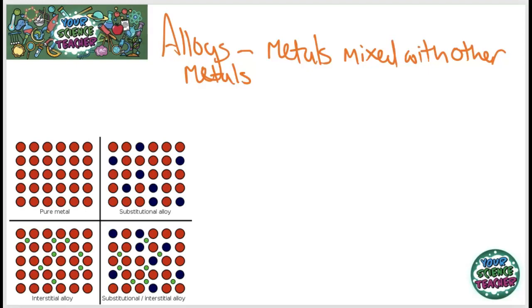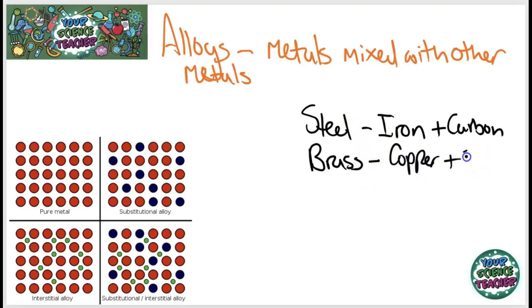Some specific alloys you need to know about are steel, which is a mixture of iron and carbon. We need to know about brass, which is copper and zinc. And the reason why we mix metals or mix metals with different elements is in order to change their properties.